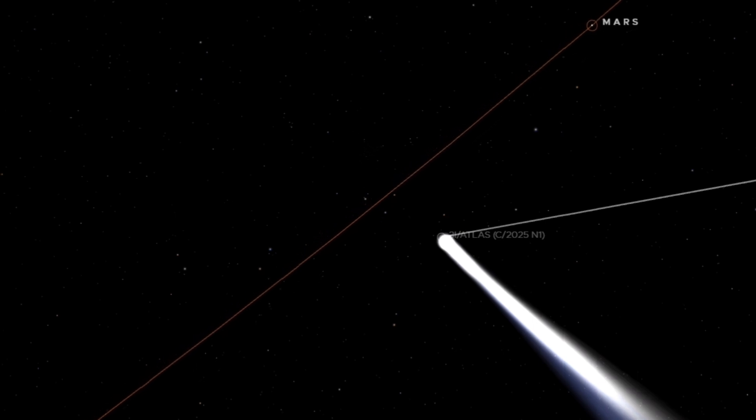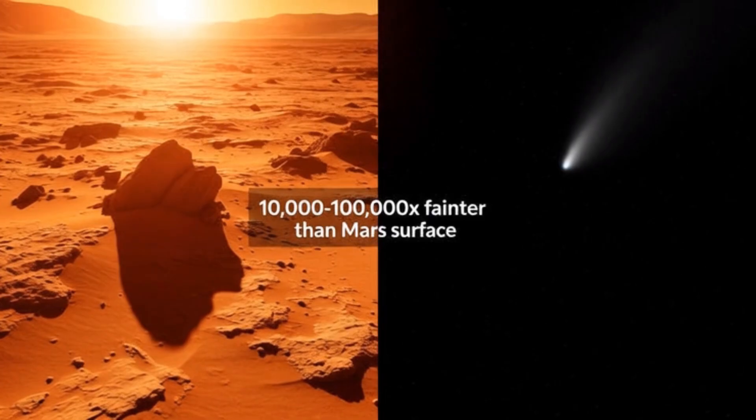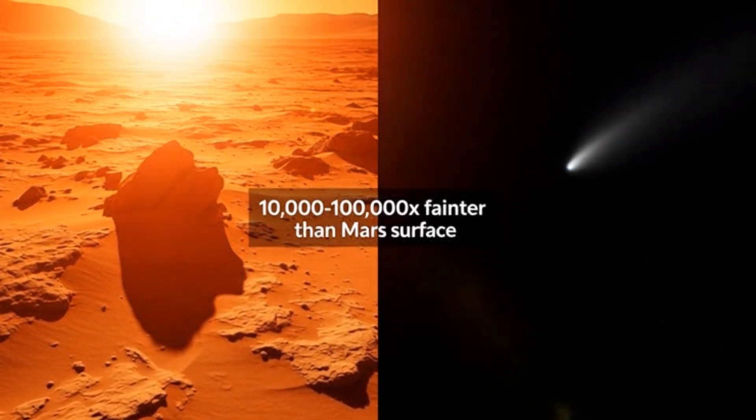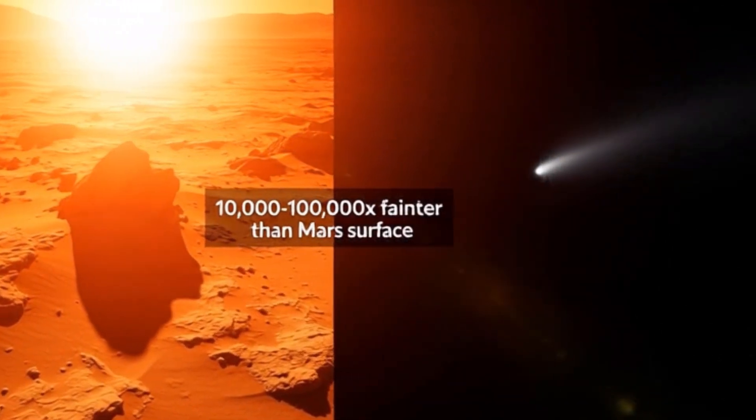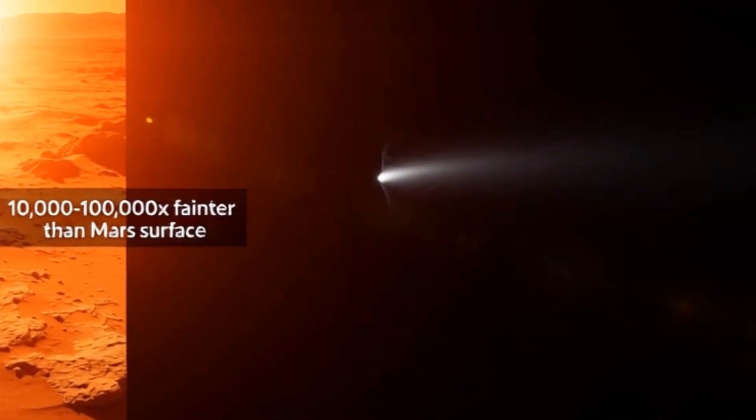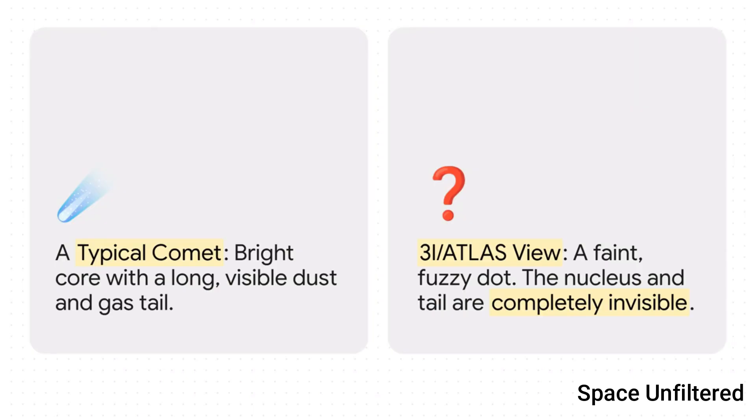And then you have the faintness of the target itself. Comet 3I/ATLAS was somewhere between 10,000 and 100,000 times fainter than the bright sunlit ground on Mars that the camera usually photographs. This was an observation right on the very edge of what was physically possible.